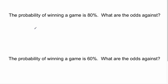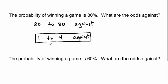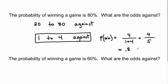Say the probability of winning a game is eighty percent. What are the odds against winning? Out of a hundred, there are twenty ways you don't win and eighty ways you do, so that's twenty to eighty against. Dividing both by twenty gives one to four against. Checking: one plus four is five total, and four ways you win out of five is 0.8, which is eighty percent. Similarly, if the probability is sixty percent, there are forty ways you don't win and sixty you do — dividing both by twenty gives two ways you don't win and three you do, so the odds against are two to three. Three out of five is 0.6, sixty percent.